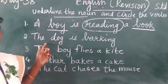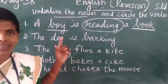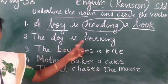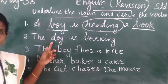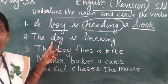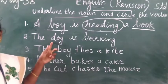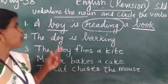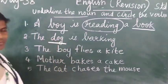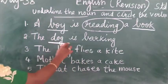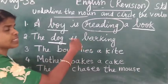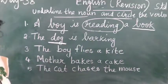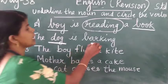See the second sentence: The dog is barking. Dog is the name of an animal, so that is a noun. And barking is the action word, so that is the verb.